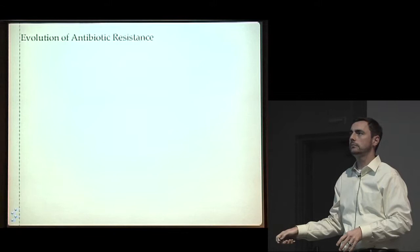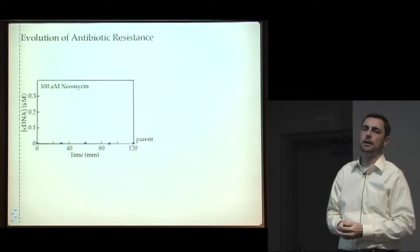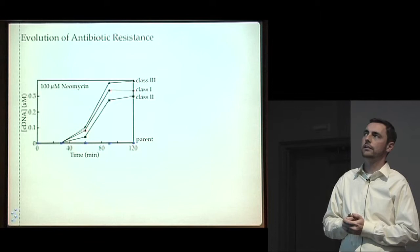So from this compartmentalized evolution experiment, we did, in fact, isolate three different families, very diverse groups of molecules, that were able to resist this aminoglycoside assault. And one in particular, I've just labeled them class one, two, and three here, but they're all between five and nine error mutants away from the parent molecule.